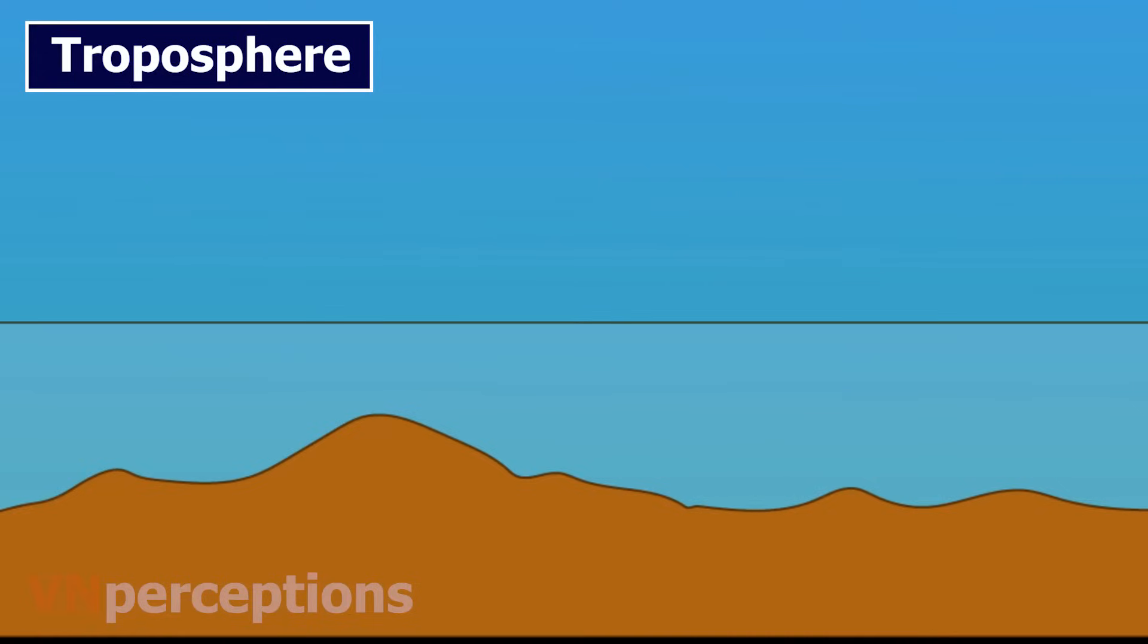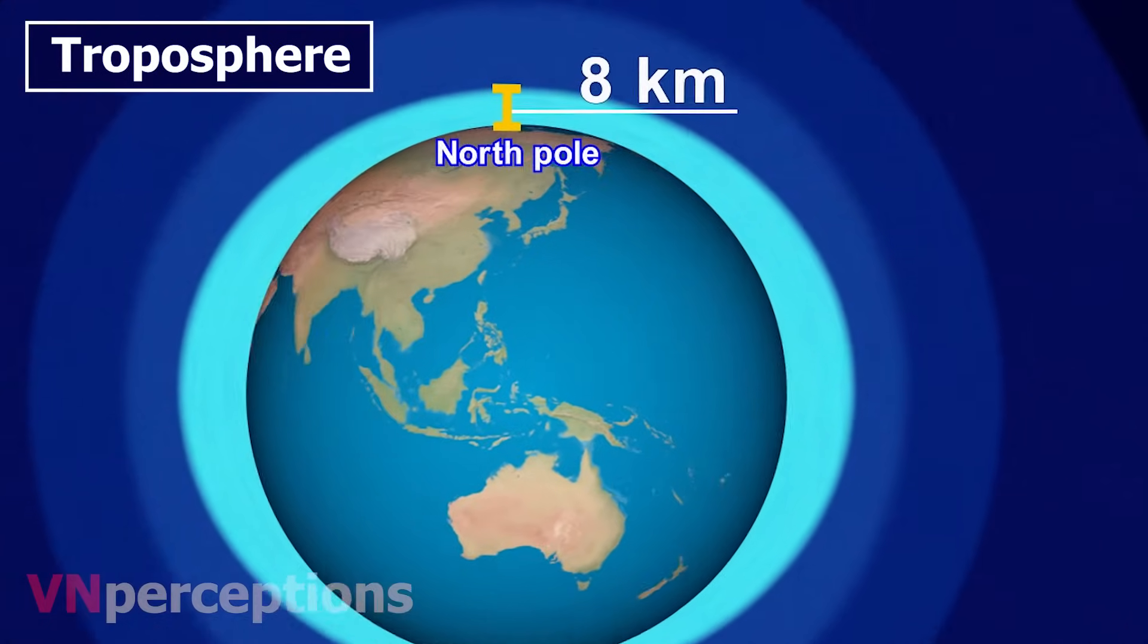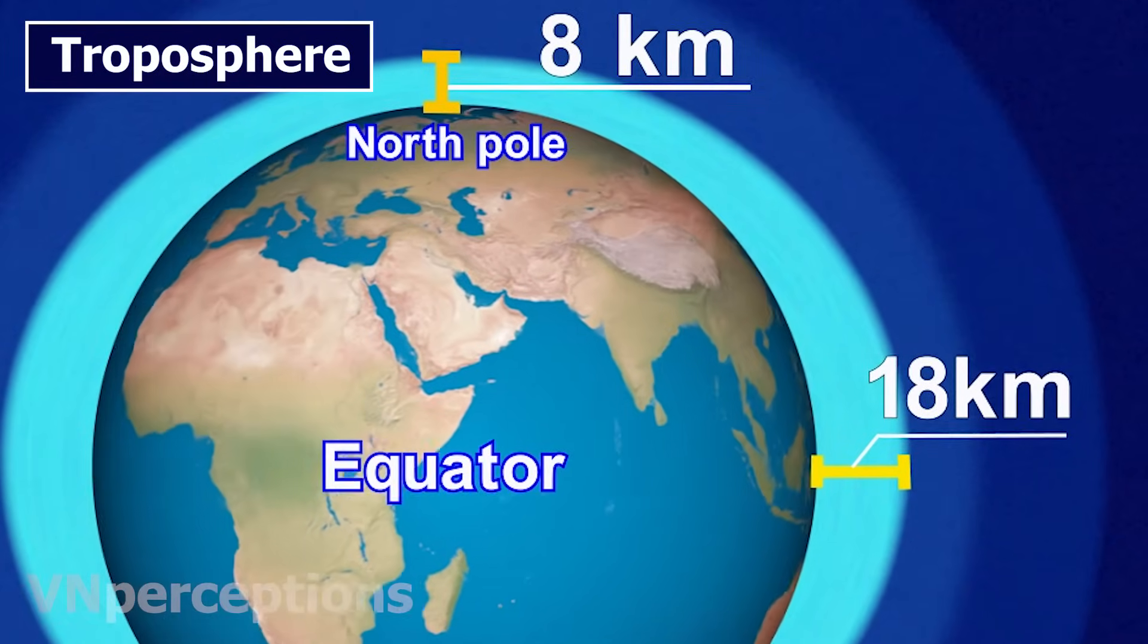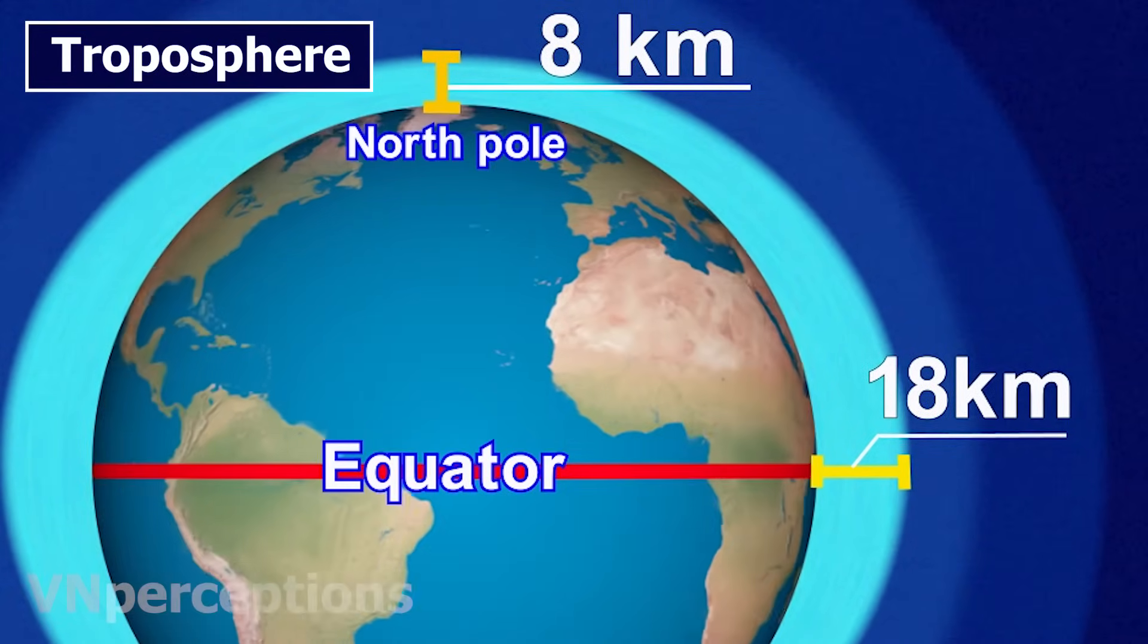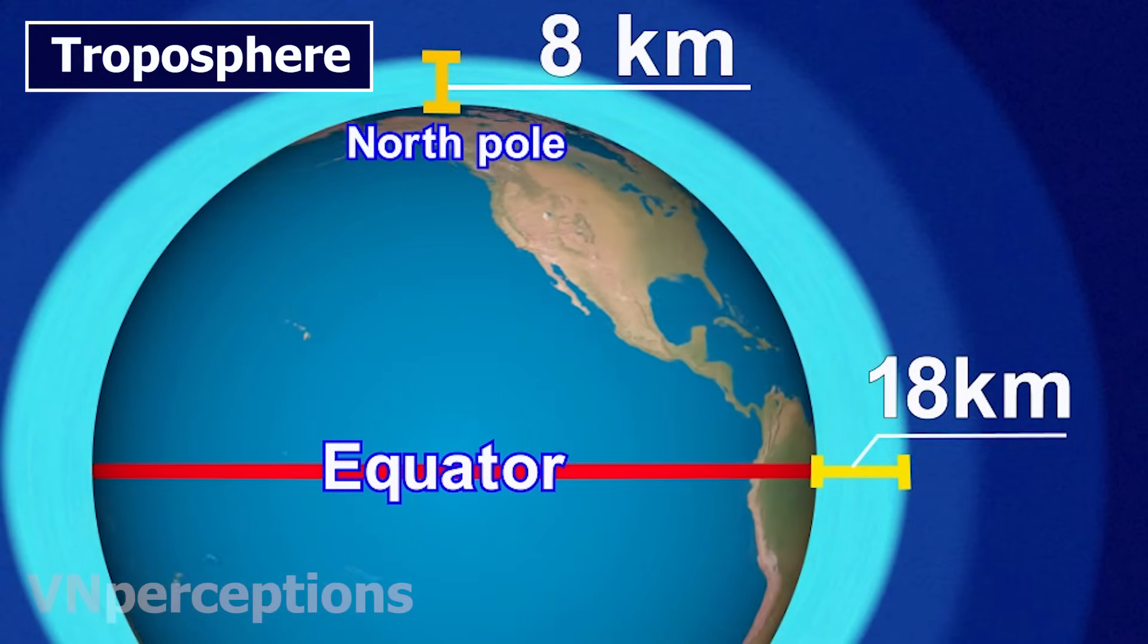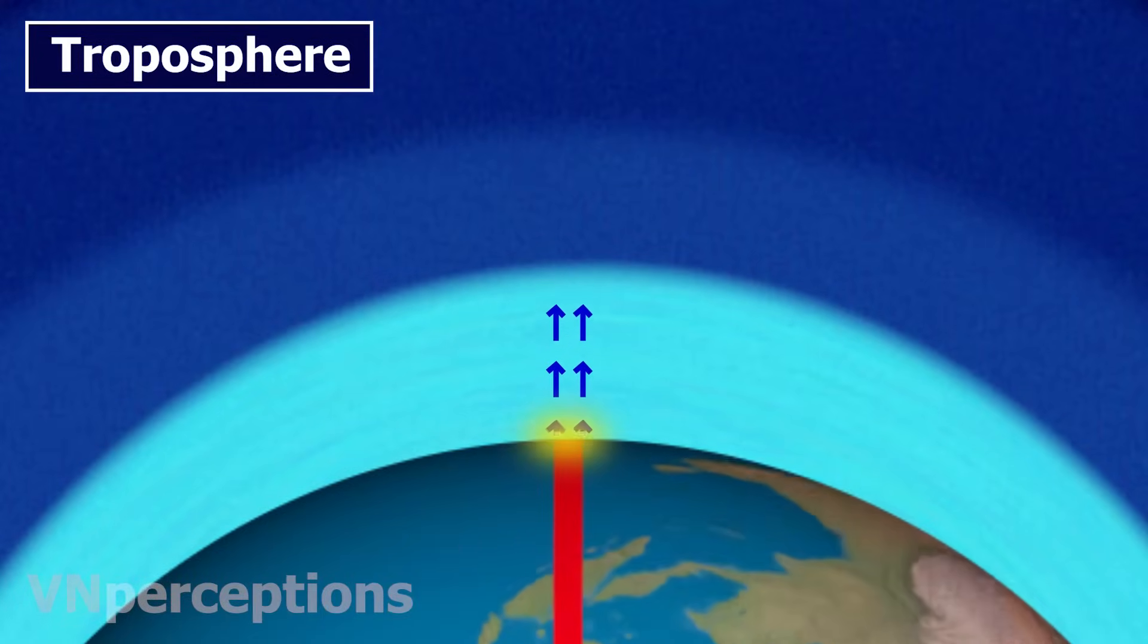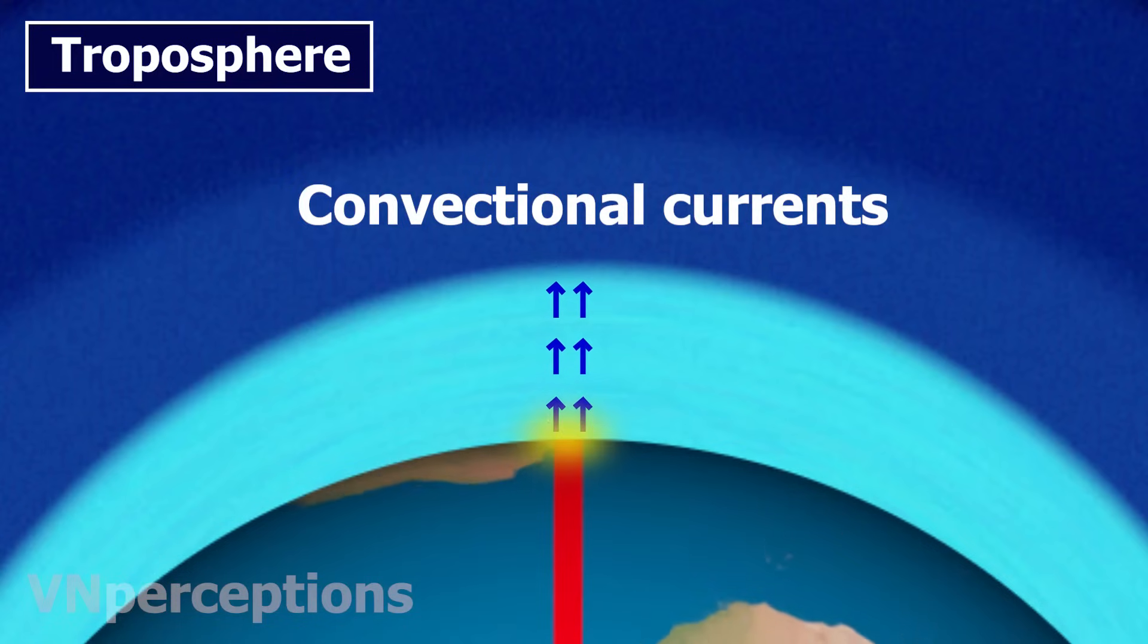The height of the top of the troposphere varies with latitude. Its average height is 13 kilometers and extends roughly to a height of 8 kilometers near the poles and about 18 kilometers at the equator. It is lowest over the poles and highest at the equator. The thickness of the troposphere is greatest at the equator because heat is transported to great heights by strong convectional currents, that is, vertical currents here.